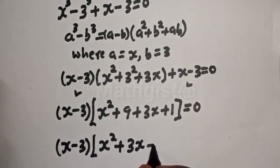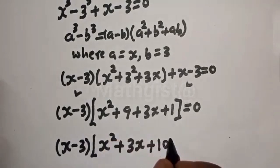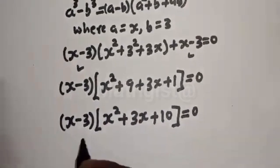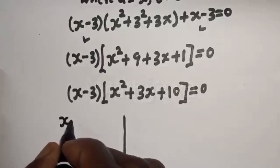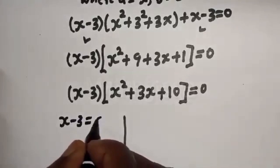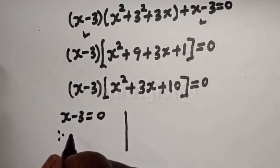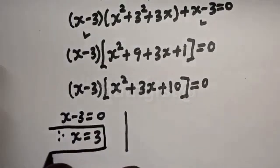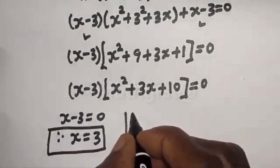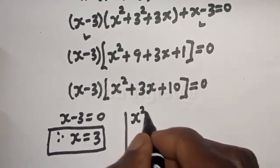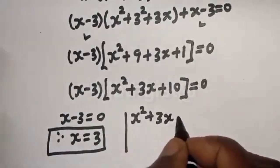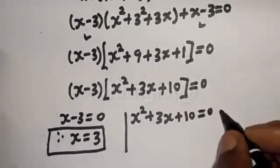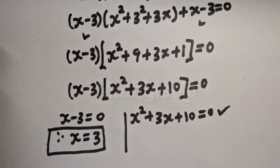This gives us (s − 3)(s² + 3s + 10) = 0. There are two cases. The first case is s minus 3 equals 0, therefore s equals 3. This is the first value. The second case is s² + 3s + 10 = 0, which is a quadratic equation solved using the quadratic formula.